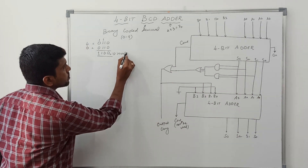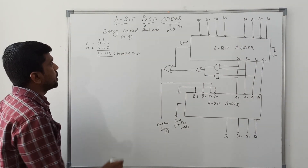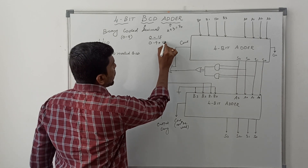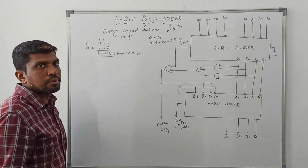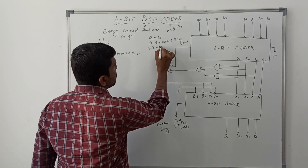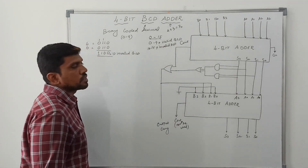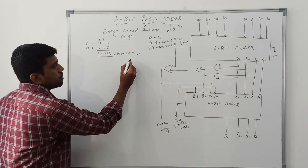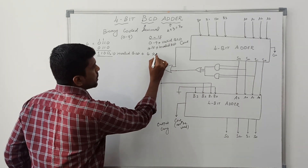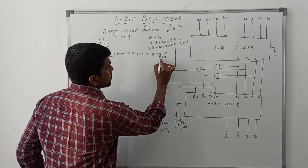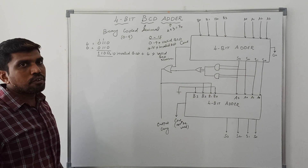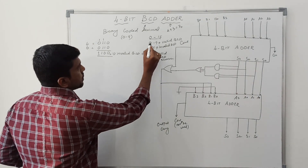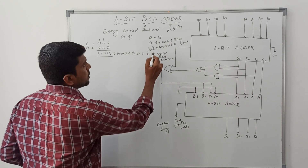The result 12 is an invalid BCD number. In 4-bit representation the range is 0 to 15, but only 0 to 9 are valid BCD numbers. 10 to 15 are invalid BCD numbers. After addition, if the result is an invalid BCD number, you add 6 to the sum to convert it into a valid BCD number.